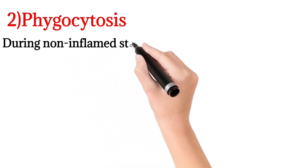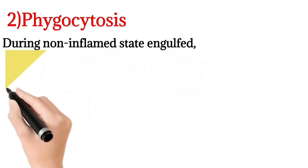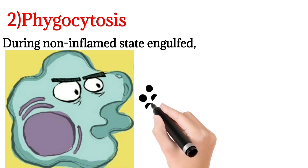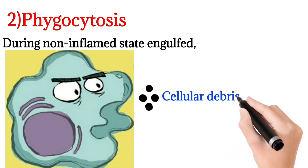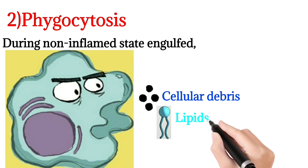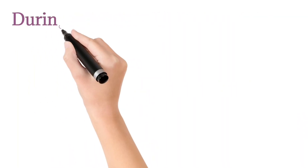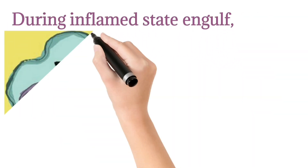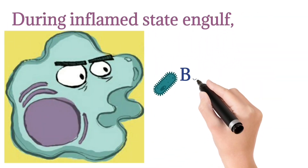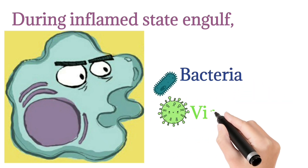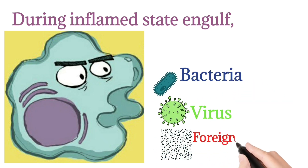The second function is phagocytosis. During a non-inflammatory state, microglia engulf cell debris, lipids, and apoptotic cells. During an inflammatory state, they engulf bacteria, viruses, and other foreign materials.